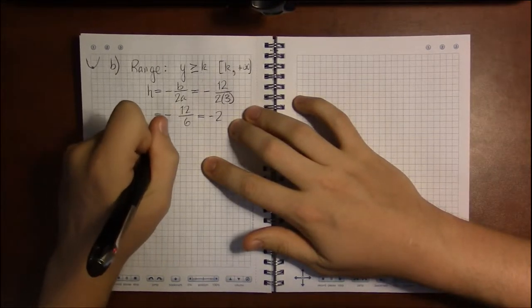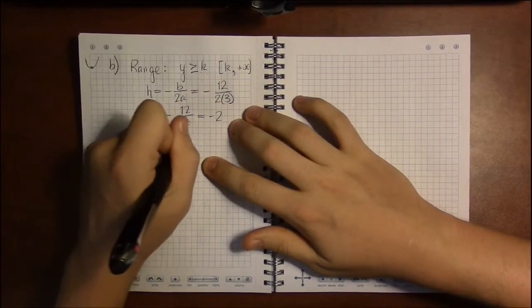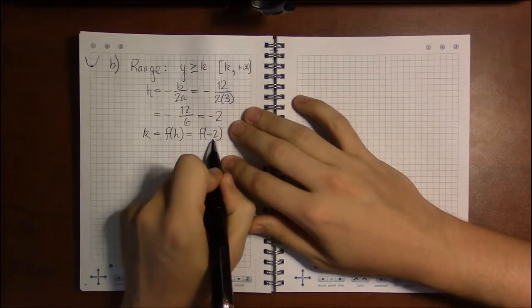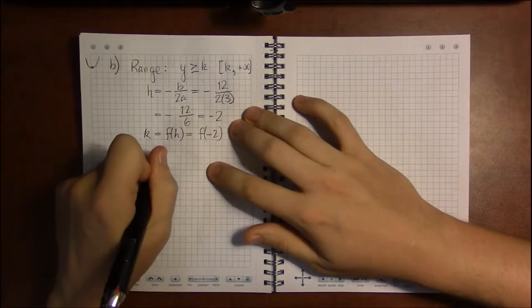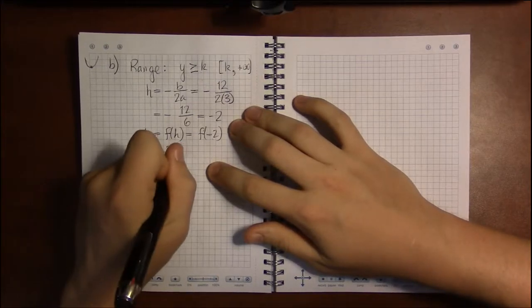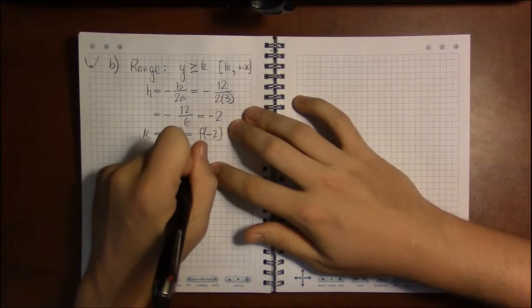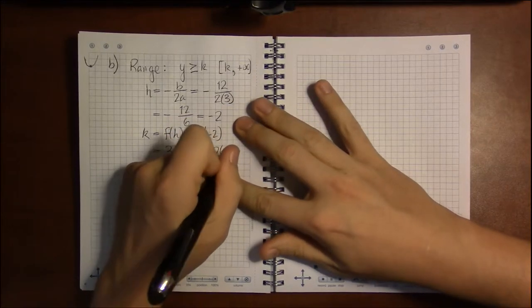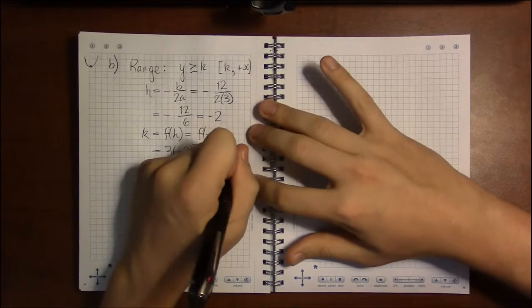And k is f of h, just plugging minus 2 into x. So that's 3 times minus 2 squared plus 12 times minus 2 minus 5.